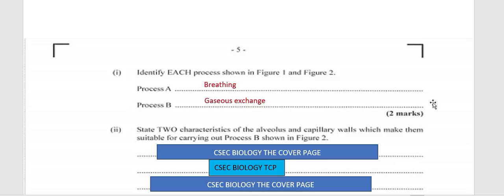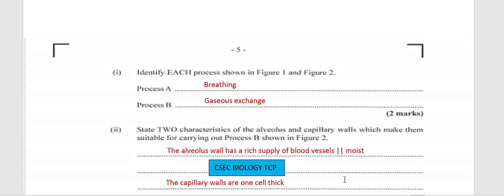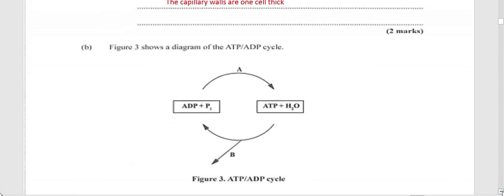Moving on: state two characteristics of the alveoli and capillary wall which make them suitable for carrying out process B. The characteristics of a respiratory surface are: they are moist, thin, one cell thick, and have a rich supply of blood vessels. Answer one: the alveoli wall has a rich supply of blood vessels. Answer two: it is usually moist. The capillary walls are one cell thick, which allows diffusion to take place readily.